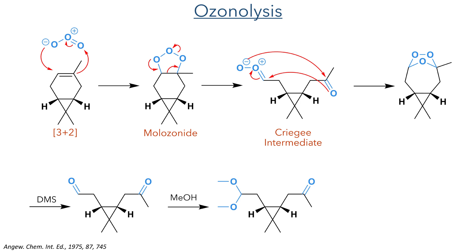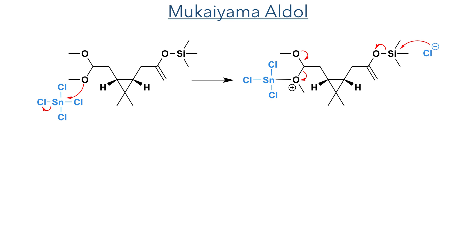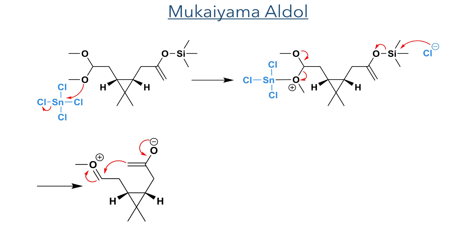Treatment of this aldehyde with methanol generates the dimethyl acetal. With the aldehyde protected as an acetal, the authors could prepare the silyl enol ether. The alpha proton of the ketone was deprotonated using LDA and the enolate was trapped using TMS chloride. This TMS enolate was then used in the Mukaiyama aldol reaction. Reacting the compound with tin tetrachloride served two functions: it deprotected the dimethyl acetal to generate the aldehyde, and also catalyzed the aldol addition. The TMS group is attacked by the chloride, which generates the enolate, which then underwent intramolecular addition to the newly revealed aldehyde to produce a beta-hydroxy ketone.